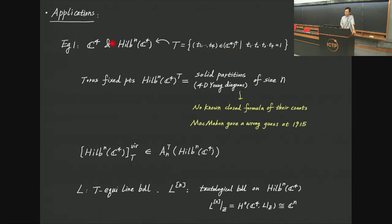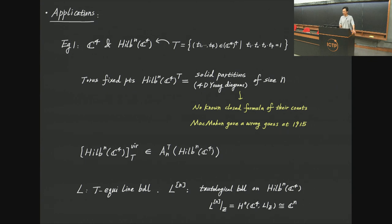Since ℂ⁴ is non-compact, we need a torus action to make things proper. We consider (ℂ*)⁴ acting on ℂ⁴ by the standard action and take the Calabi-Yau sub-torus T₁T₂T₃T₄ = 1, preserving the holomorphic volume form. The torus fixed points of the Hilbert scheme are not 3D Young diagrams but 4D Young diagrams — boxes in 4D space — also called solid partitions in combinatorics. The combinatorics of solid partitions is very difficult, and to this day there is no known closed formula, even conjecturally, for their count; MacMahon himself gave a wrong guess in 1915.